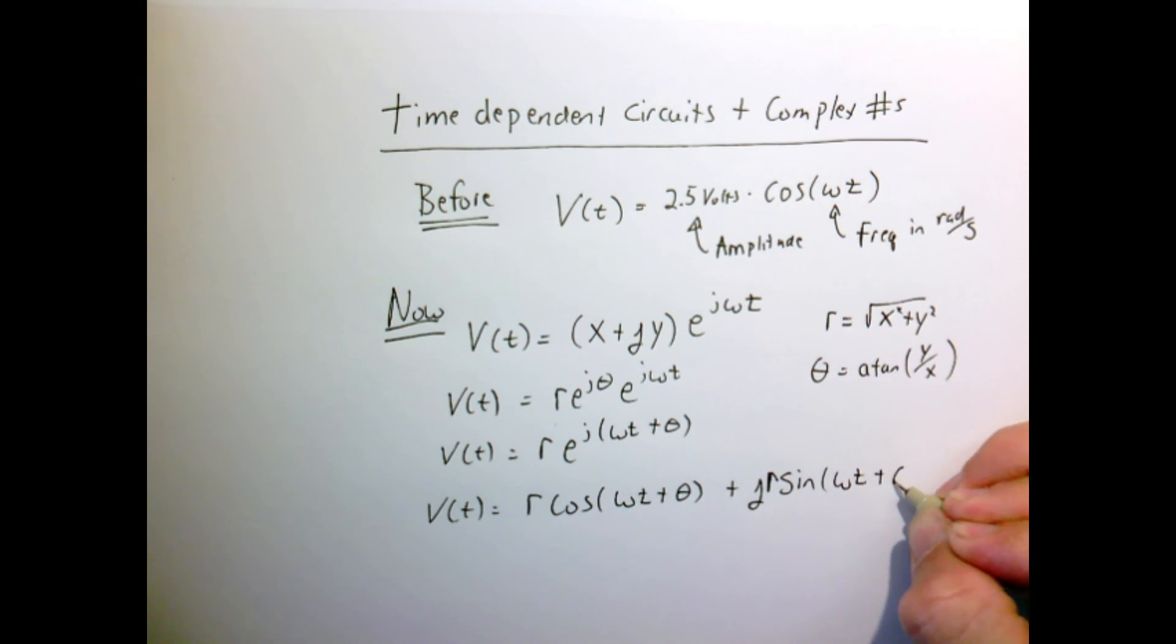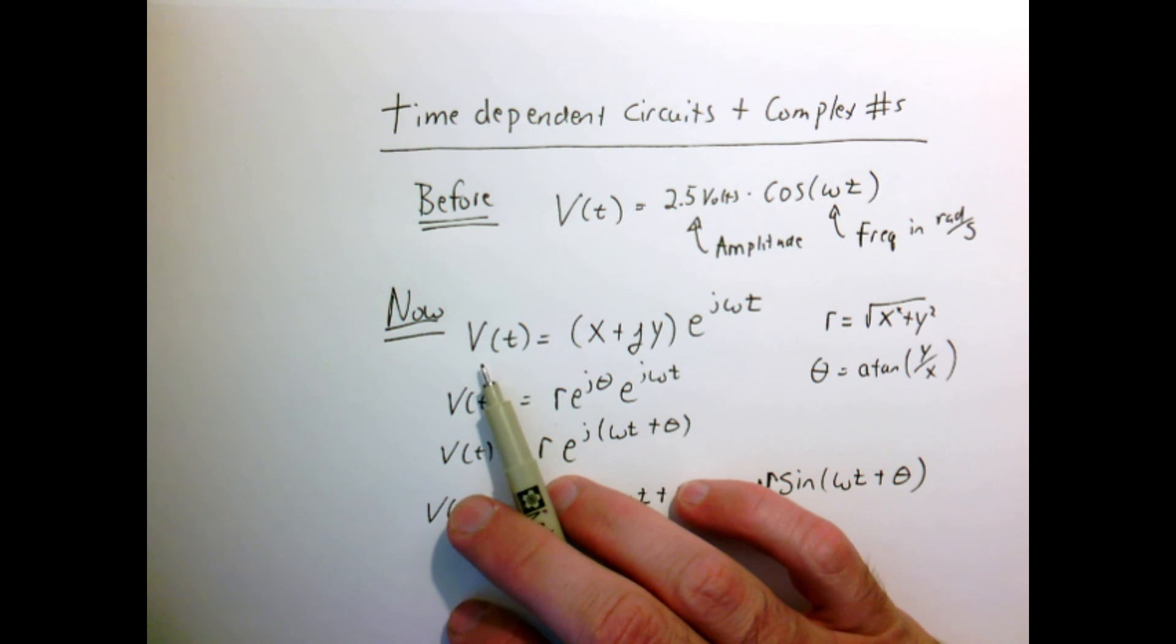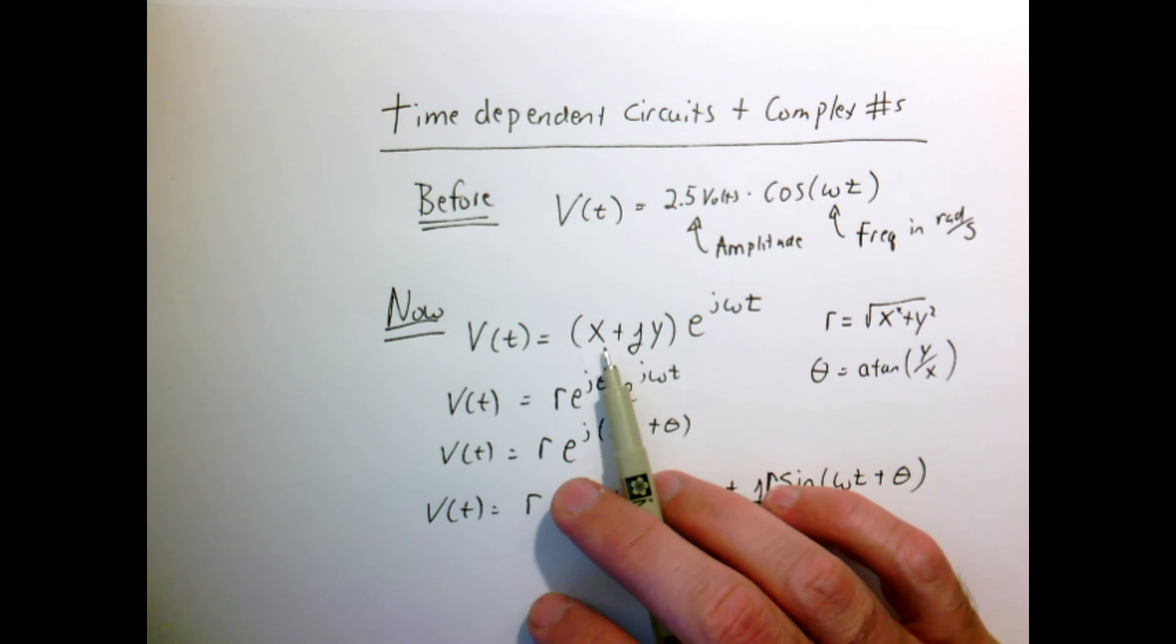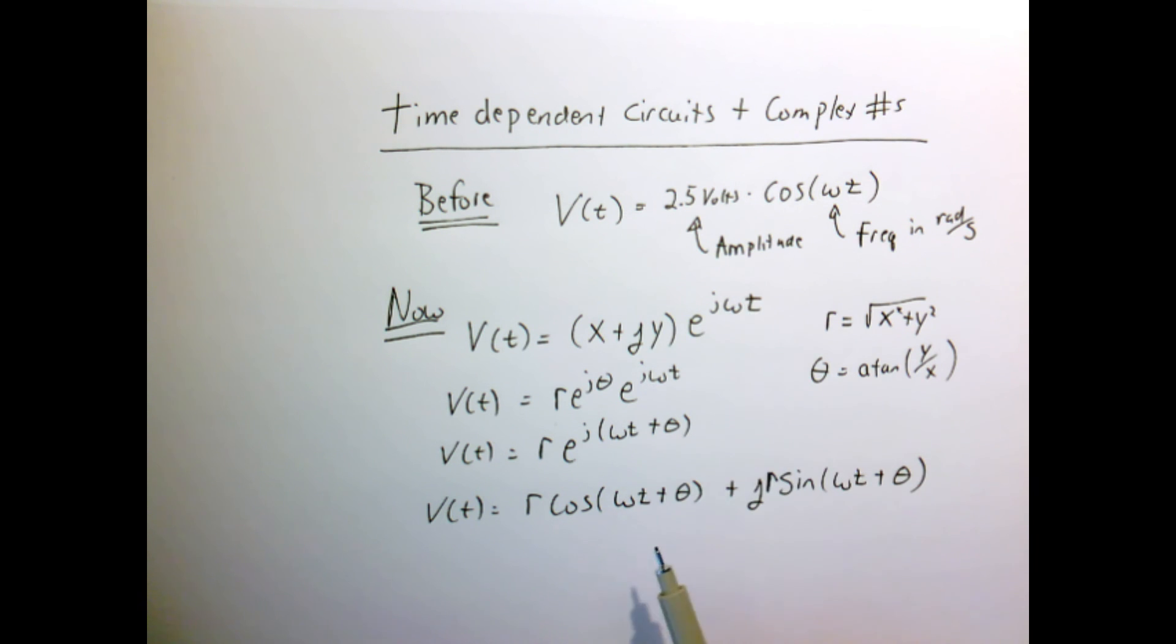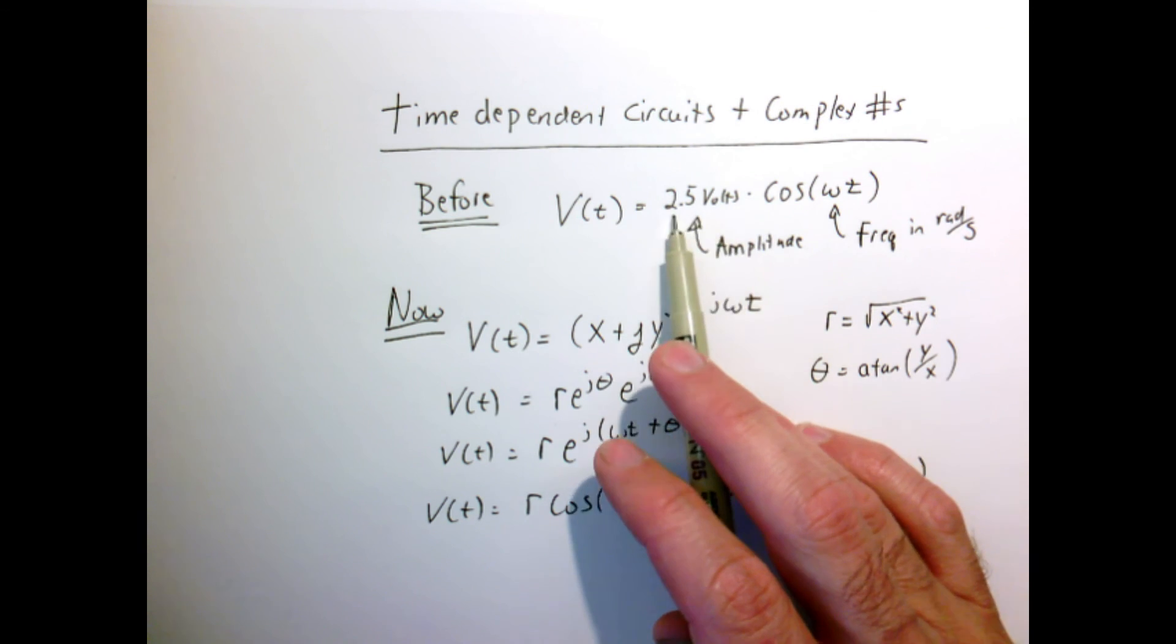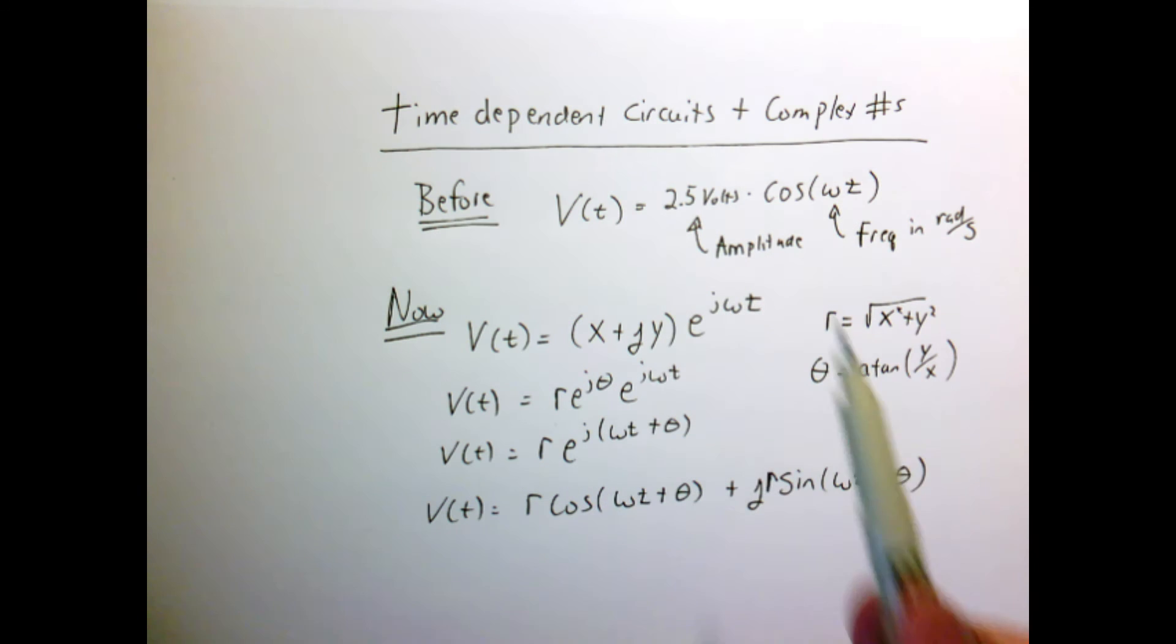And so now we're seeing that if we represent a signal, a voltage which is changing with time, as a complex number times e to the j omega t, that somehow this complex number here is embedding both the amplitude and the phase in the signal. Because now we have a form that looks like what we had before, where r, the amplitude of our complex number, is the magnitude of the signal in volts.